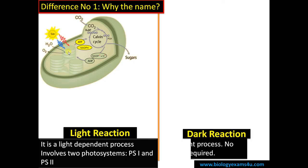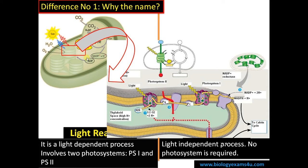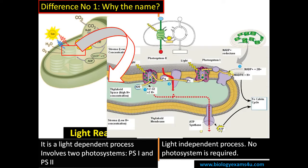Let us zoom in this region. This is the thylakoid membrane. On the thylakoid membrane these photosystems are located — you can see photosystem 2 and photosystem 1.